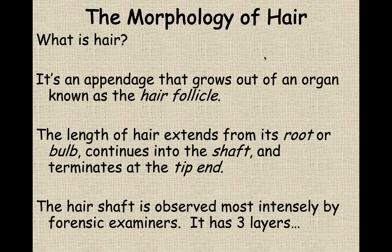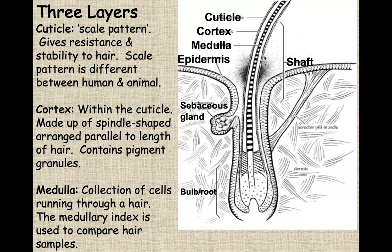The length of the hair extends from the root all the way to the tip. The root of the hair is what grows within that follicle — we also call that the bulb. The whole middle part of the hair between one end and the other is called the hair shaft, and then the tip is the very end of your hair.